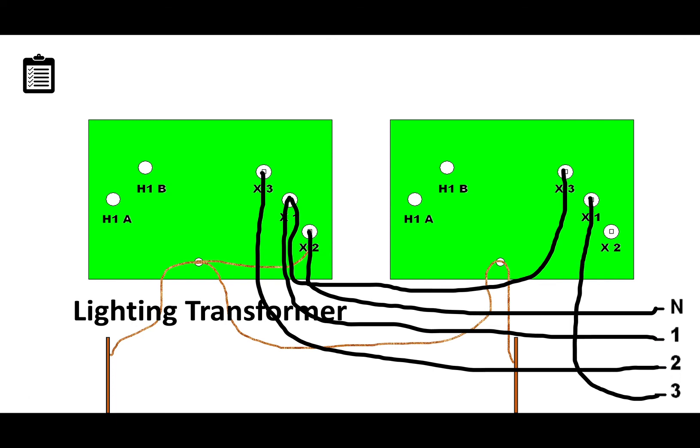The last thing we have to hook up: we hook wire number three to the X1 of the power transformer. This would be the wild leg at this point. So voltages from neutral to one would be 120, neutral to two would be 120, neutral to three would be the wild leg voltage of 208 volts. One to two would be 240, one to three would be 240, and two to three would be 240. We now have our three phase.